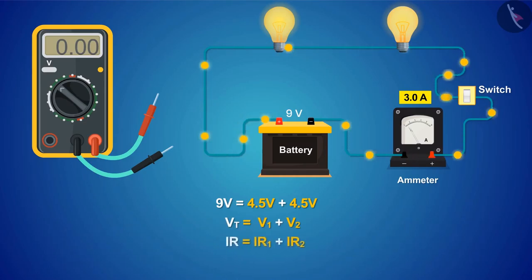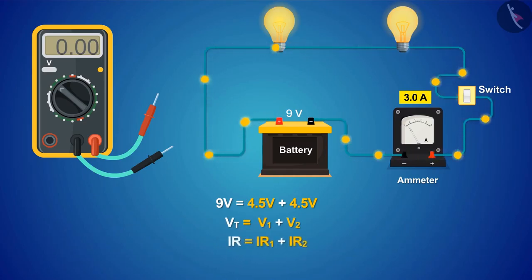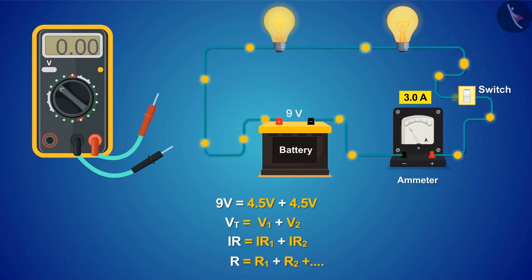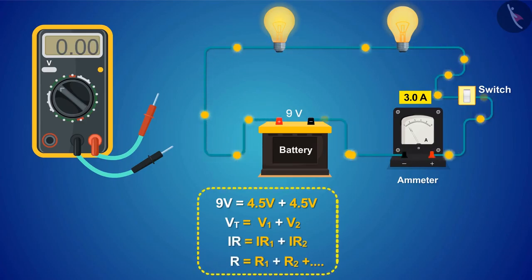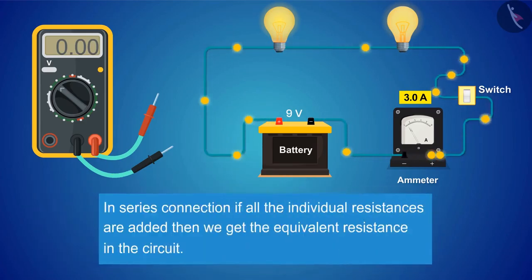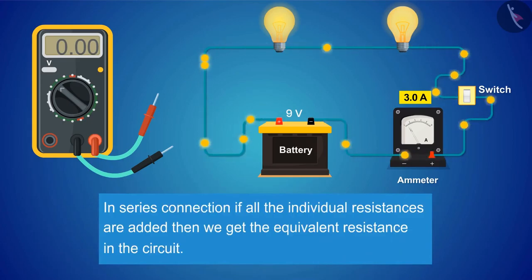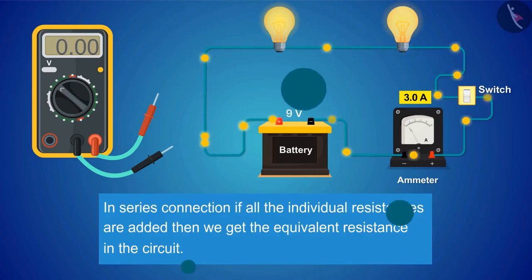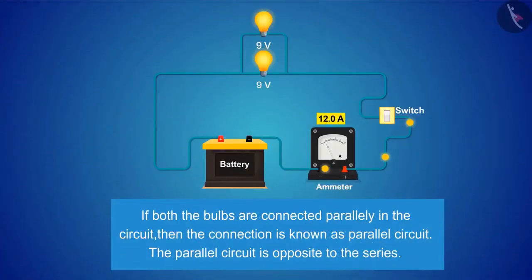If we apply Ohm's law here, and since current is constant throughout the series circuit, we get the following equation. It can be said that in a series connection, if all the individual resistances are added, we get the equivalent resistance in the circuit.